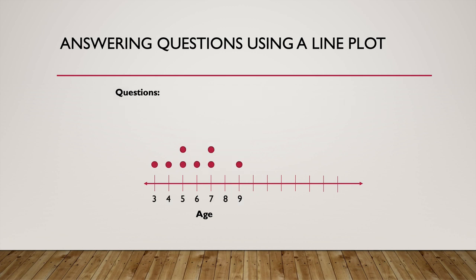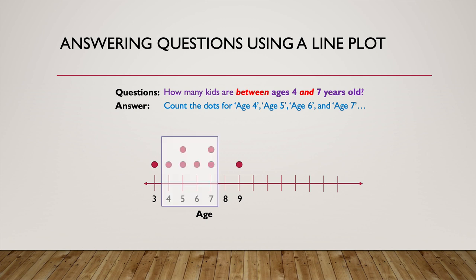So here's another question. Let's try this. How many kids are between ages four and seven years old? All right. So to answer that question, count the dots for age four, age five, age six, and age seven. So we can put a box around the ages we care about, which would be the ages four to seven, five, six, and seven. And so we don't care about three, and we don't care about nine. Oh, very good. We don't care about nine. So let's count the dots. One, two, three, four, five, six. There are six dots.